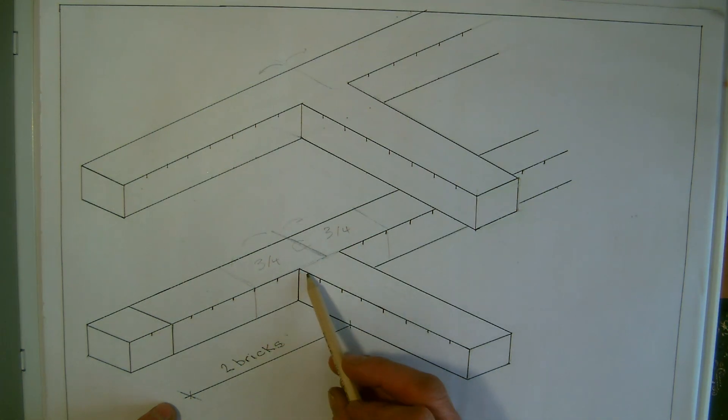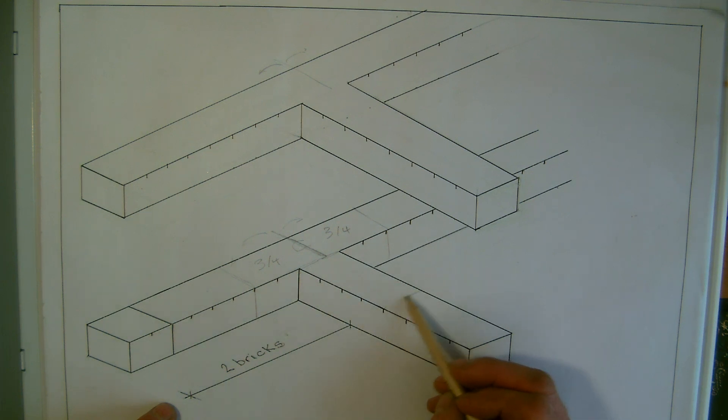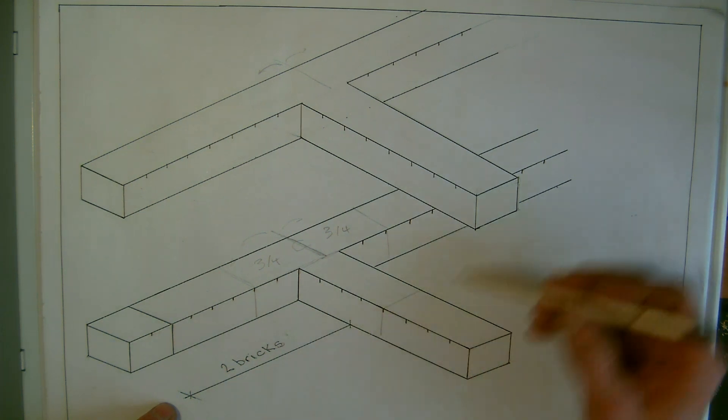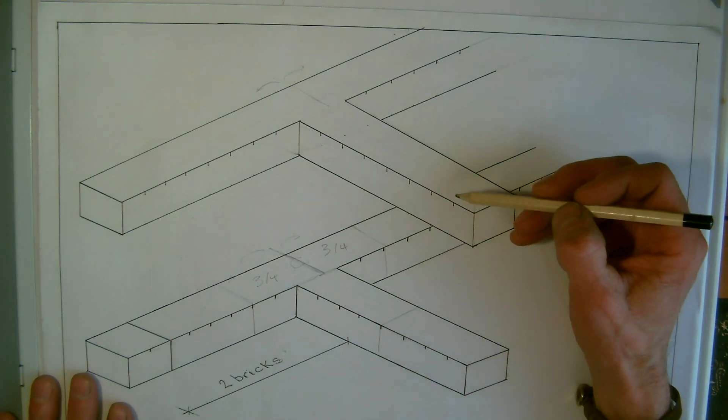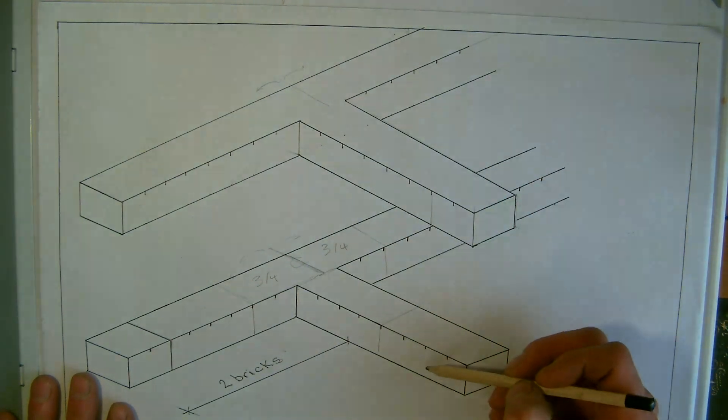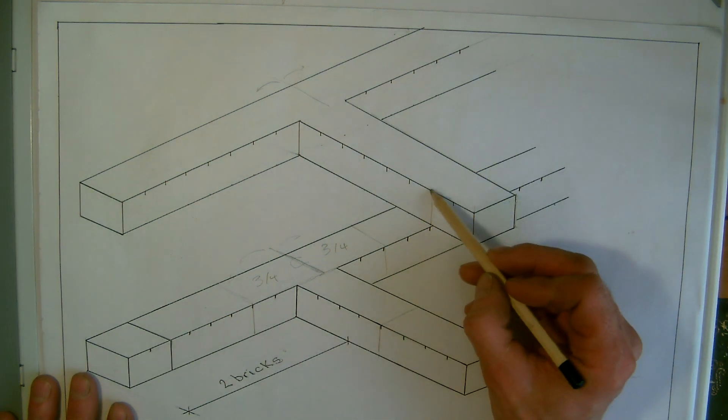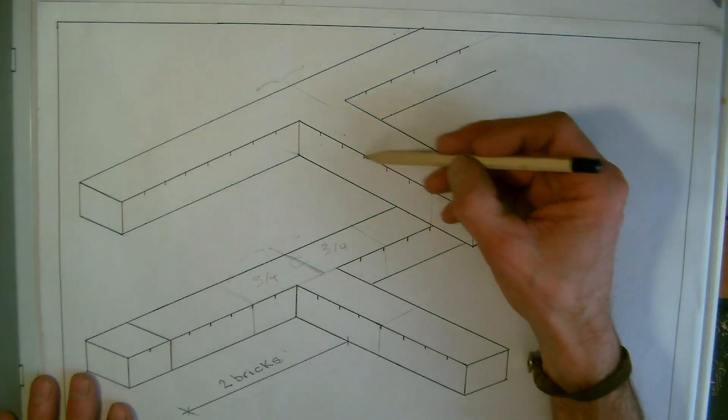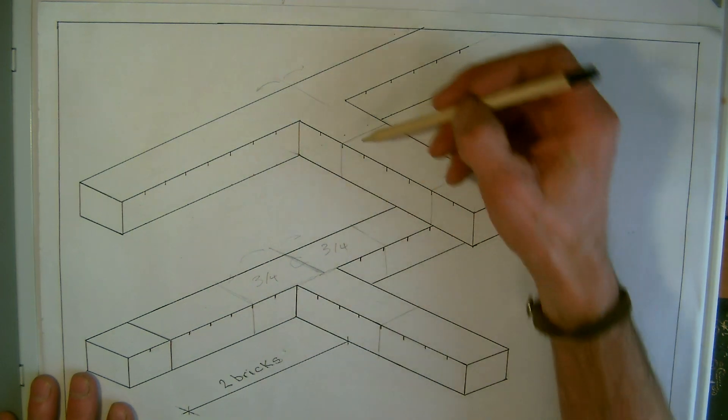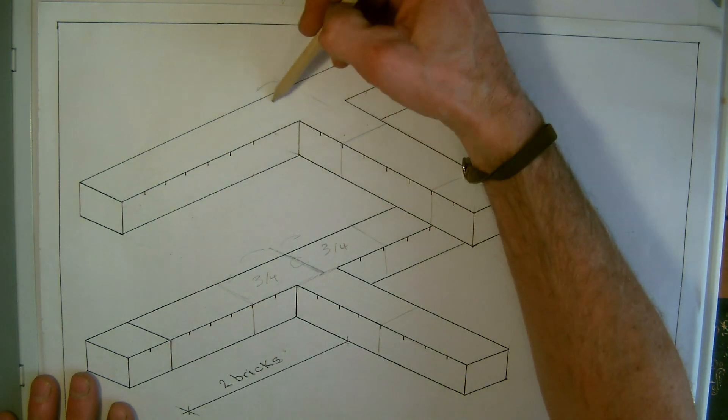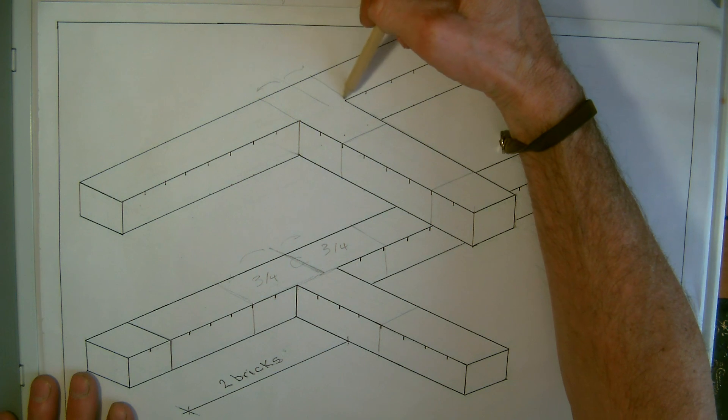And this one here, again, we could see we have a whole brick and a whole brick. So looking at the second course, we can see that we would start - obviously we had a stretcher there, so this one would be a header. So a stretcher four, and then a stretcher would go all the way through.